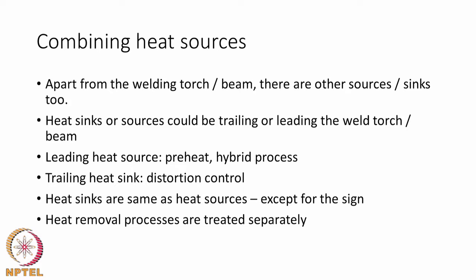Apart from the welding torch or the beam, there are other heat sources as well as heat sinks present in welding. We have heat sources apart from the welding torch for preheating conditions or hybrid welding conditions, and we may have heat sinks that could be trailing because we want to remove the heat to control distortion, for example.